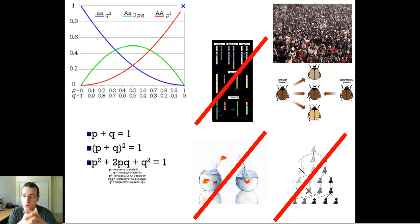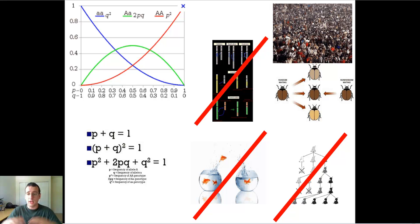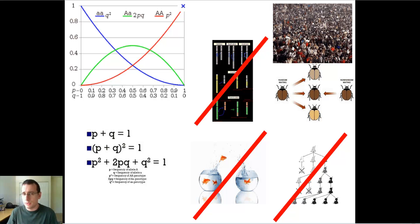What conditions will lead to evolutionary equilibrium, or no microevolution? They looked at the fact that large populations — where it would be very hard for evolution to take hold or for any changes to actually affect the population at large — will actually slow down evolution. Likewise, random mating, which makes it impossible for specific groups to differentiate themselves from others, is also going to slow down evolution because separation is crucial for evolution.